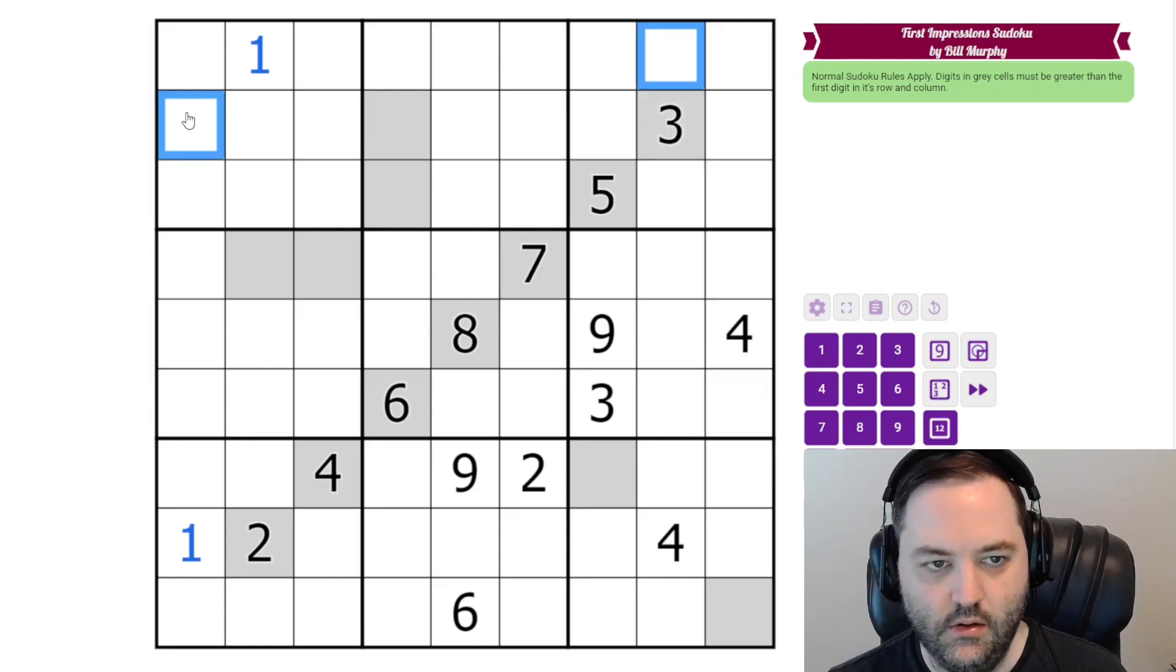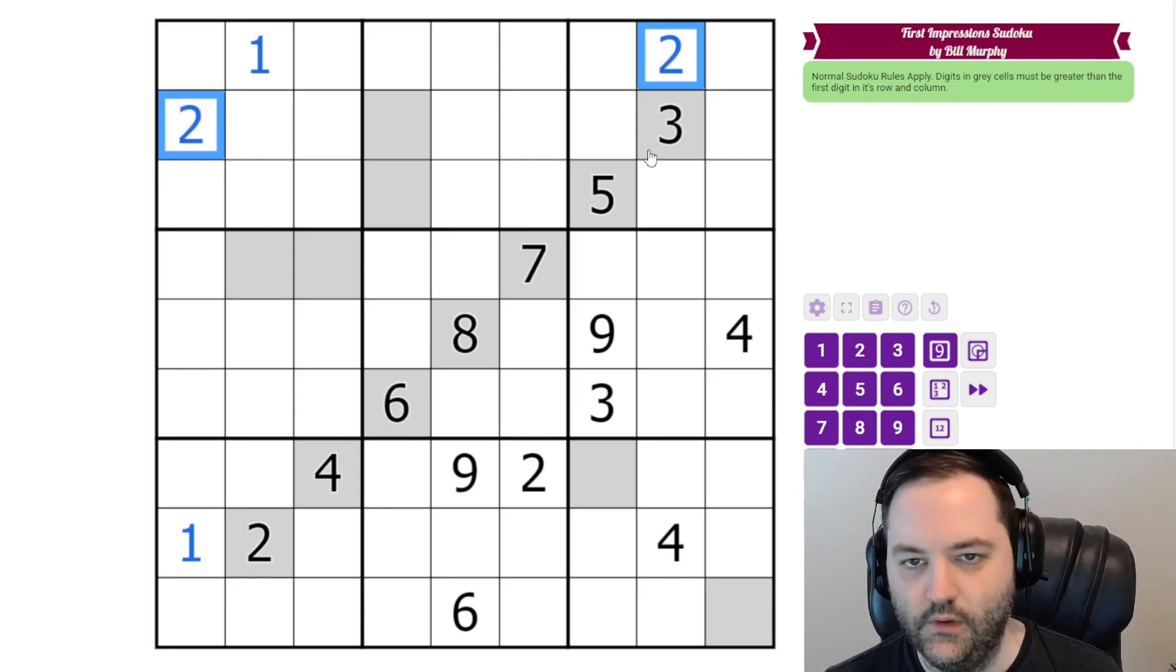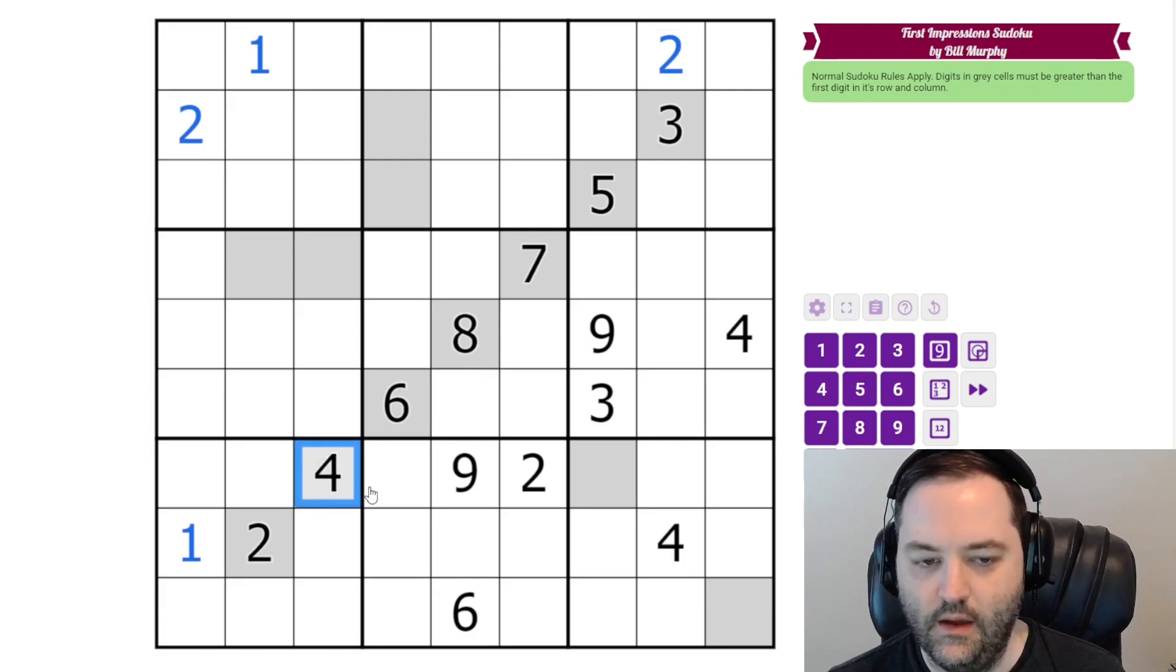Now if we look at the 3, these have to be less than 3, but they can't be 1 because we just placed 1 in both the first column and the first row. So these have to be 2. And we're going to do the same thing with all of these givens. The 4 needs something less than it, and it can be 1 and 2, so these are 3.